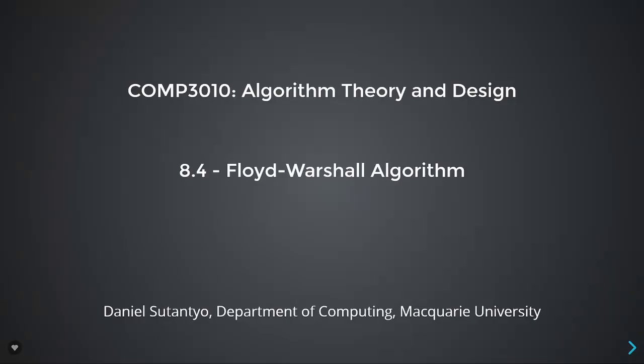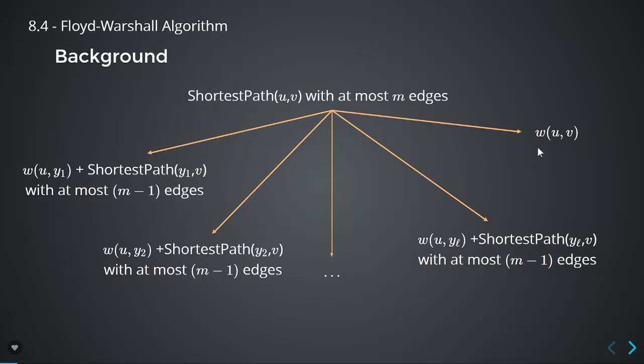We're going to go through the last method for this week. This is another all-pairs shortest path algorithm called the Floyd-Warshall algorithm. It's going to be very similar to the matrix multiplication method from the last lecture, but with a different decomposition. With matrix multiplication, we find the shortest path from i to j with just one edge, then two edges, then three edges, and so on.